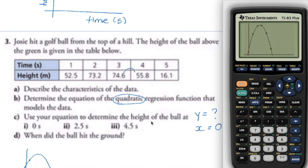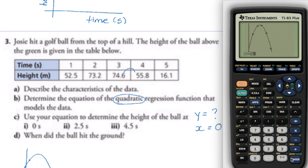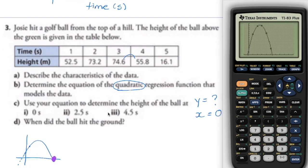After that, we're going to figure out the height of the ball at given times. Height is the Y value, so I'm looking for Y when X equals specific values. I'll start with X equals 0 — go to Second Function Trace, number one, enter 0, and that gives you the answer. Remember, height is in meters.